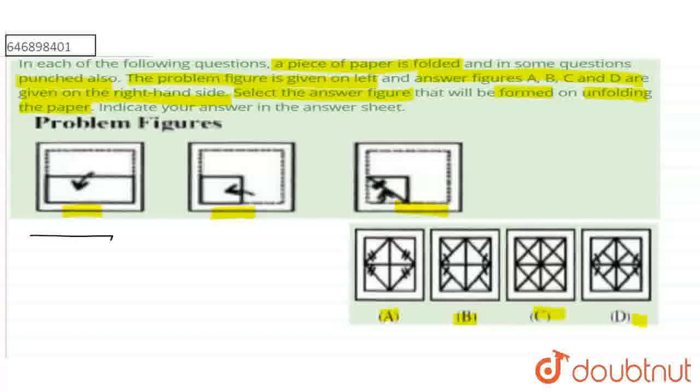So guys, let's assume that the piece of paper has a square shape. When it is horizontally folded, its shape becomes like the first figure. Okay?